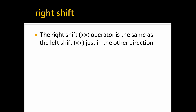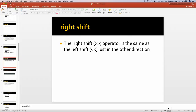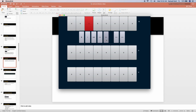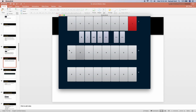The right shift operator is the same as the left shift operator, it just works in the other direction. Let's see this in the binary grid. If we toggle the top bit to be 128 and shift it right by one place, we'll end up with 64, then 32, 16, 8, 4, 2, and 1.